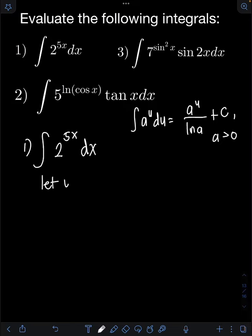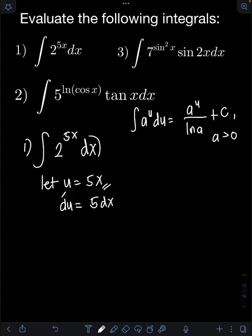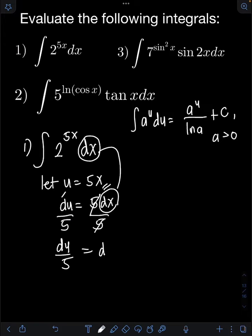We let u equal to 5x. Getting the derivative of both sides: du equals 5 dx. We have created the dx term in the integral but with an extra coefficient of 5, so we get rid of that by dividing both sides by 5, giving us du over 5 equals dx.